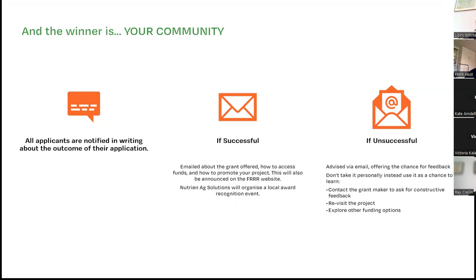All applicants are notified via email about the outcome. If successful, you'll receive details on how to access the funds, and Nutrient Ag Solutions will often contact you to organise a local award recognition event. If unsuccessful, you'll receive an email and we ask that you call us to find out the strengths and weaknesses of your project and discuss other funding options. I can't recommend highly enough speaking to FRRR people on the phone about your project — they know all other programs and have years of experience reviewing grant applications.